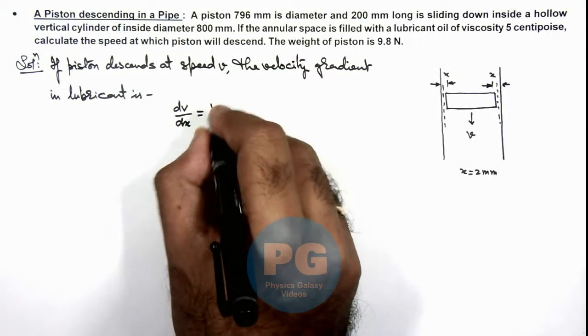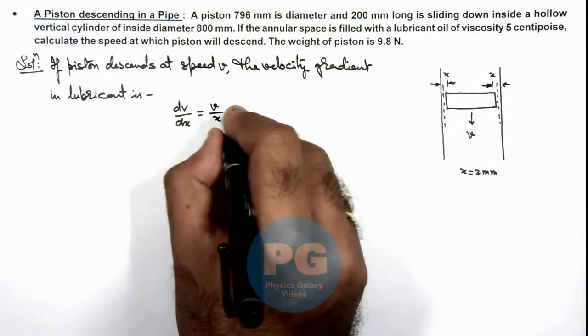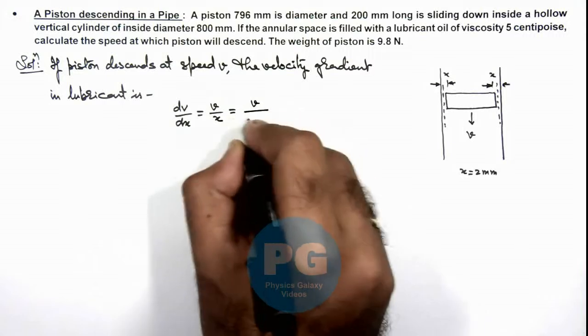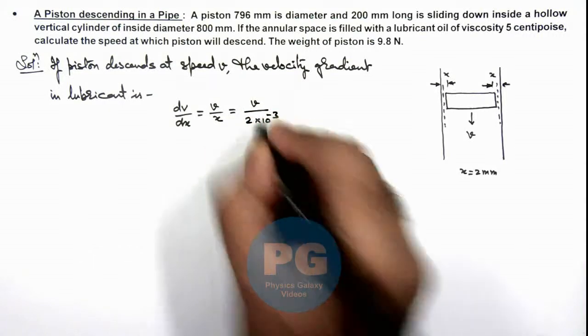So this can be given as v by x, and we can write it v divided by x is 2 into 10 to power minus 3 meter.